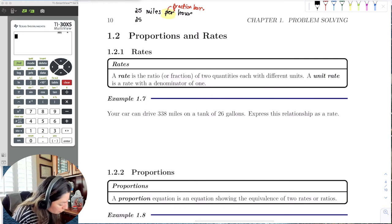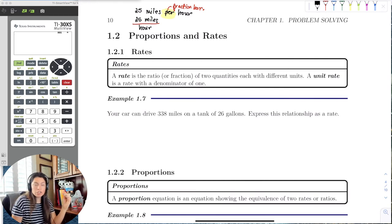So now let's rewrite it. Let's rewrite 25 miles per would be the fraction bar hour. So now I've rewritten this fraction. Notice now this is a rate because it is a fraction of two quantities with different units.